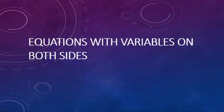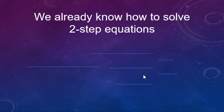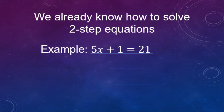Here we're going to look at solving equations with variables on both sides. But before we get to that, we want to review and go back over just a regular two-step equation. The example we'll do here is 5x plus 1 equals 21.